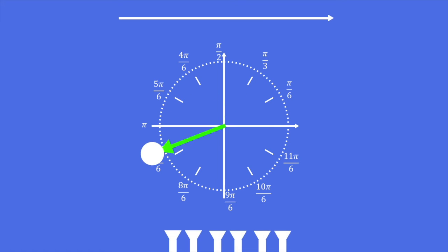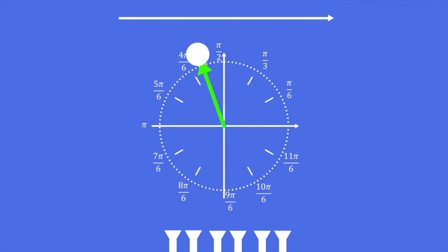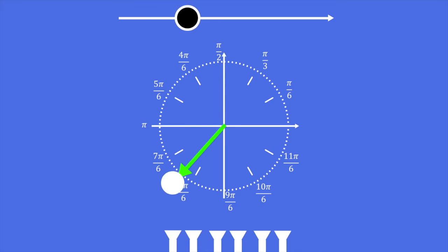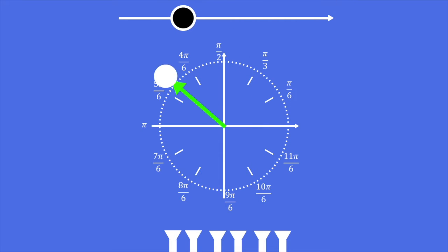If I illuminate this object with a series of flashlights as shown here, I would like to see how the shadow of this object behaves on a screen or a wall, like what is shown by this horizontal line above. When the flashlights are turned on, the shadow of the object on the horizontal line looks like this. This back and forth motion of the shadow is similar to a back and forth motion of a spring-block system on a frictionless floor.